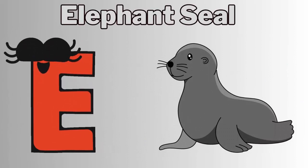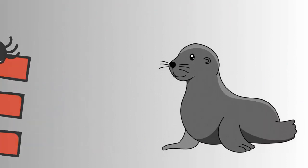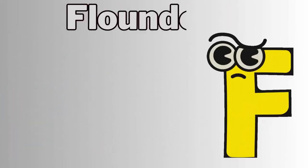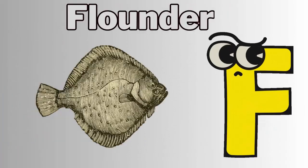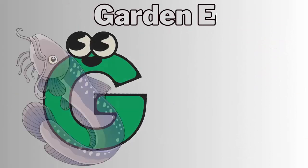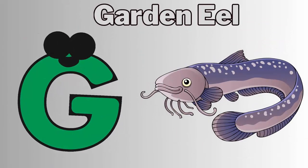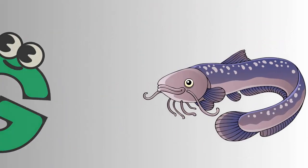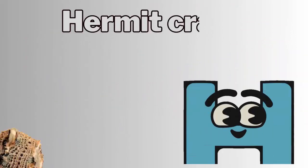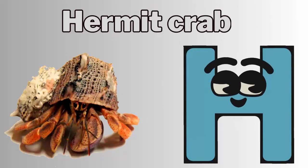E for elephant seal, F for flounder, G for garden eel, H for hermit crab.